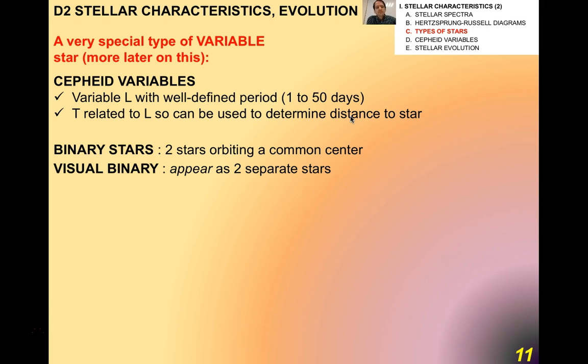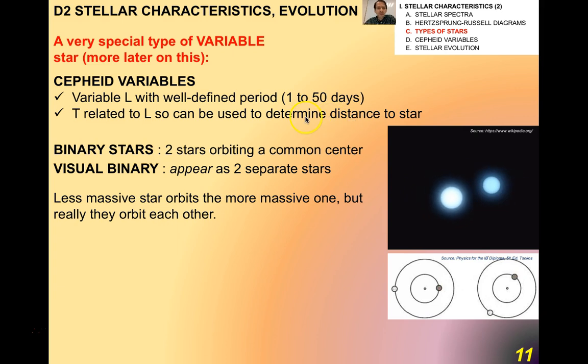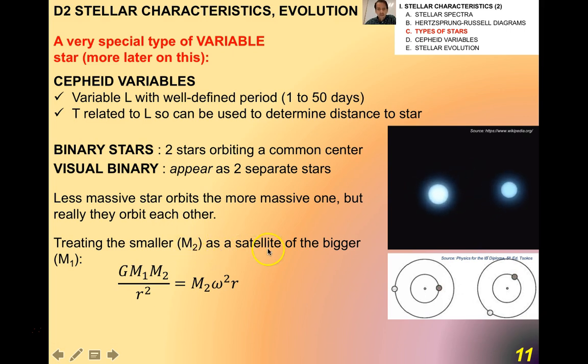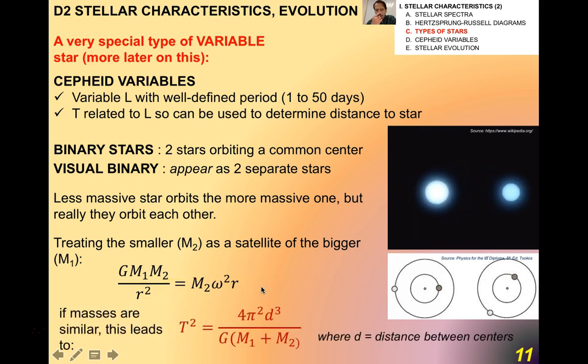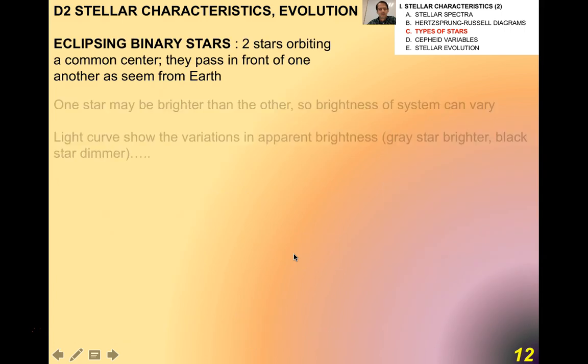Now, other kinds of stars: Binary stars. These are two stars orbiting a common center. We talked about that back when we talked about gravitation a little bit. A visual binary is where a star appears as two separate stars. In a visual binary, or a binary star, you have less massive star orbiting the more massive one. But really, they orbit each other. It's the change in luminosity that becomes a telltale sign of what's happening. Treating the smaller of the two as a satellite of the bigger, we have Gm1m2 over r squared equals m2 times omega squared times r. This should look familiar to you. If the masses are similar, then this leads to the fact that T squared is proportional to d cubed. Which should sound familiar to you if you remember Kepler, where d is the distance between centers. I want you to think about how much this really is related to Kepler or where this equation comes from.